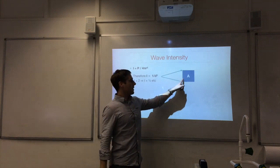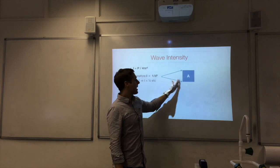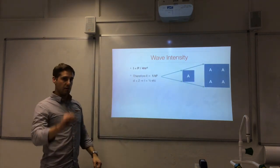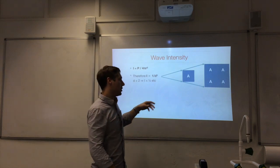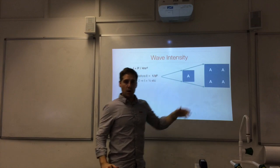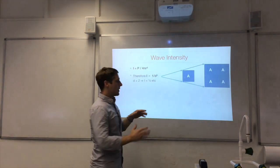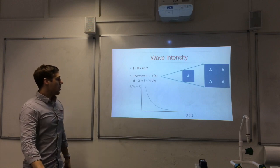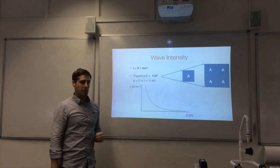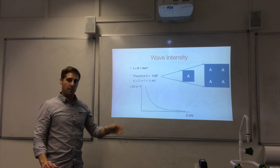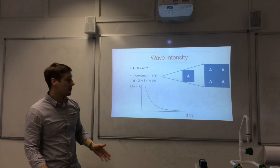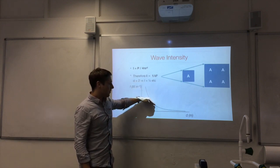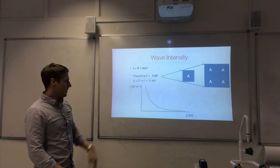The wave energy from the point source covers a certain area at one distance, and if we double the distance it covers four times the area, so the energy is more thinly spread and you receive less energy per unit area. A graph of intensity against distance gives a rapid fall-off with an asymptote — this is the shape of an inverse square graph, which comes up often in physics.